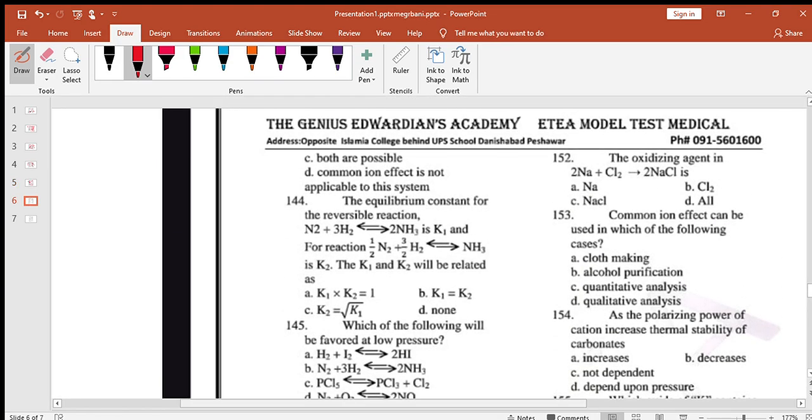The equilibrium constant for the reversible reaction: this is opposite. It is opposite and divided by 4. The 1 over 4, this is actually opposite and divided by 2. The 1 over 2 is applied. So reverse it, it is also opposite.